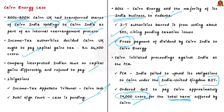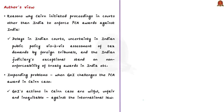India lost both cases at PCA. The author noted that for enforcement of PCA awards, Cairn initiated proceedings in courts of USA, UK, Netherlands, Canada, and Singapore rather than Indian courts — due to delays in Indian courts, uncertainty in Indian public policy on assessment of tax demands by foreign tribunals, and Indian judiciary's exceptional stand on non-enforceability of treaty awards in India. The author's second point concerns the impending problems if India challenges the PCA award in the Cairn case, noting that the government enforced tax demands through seizure and sale of Cairn shares, seizure of its dividends, and withholding tax refunds — actions that are willful, unfair, inequitable, and against international law.